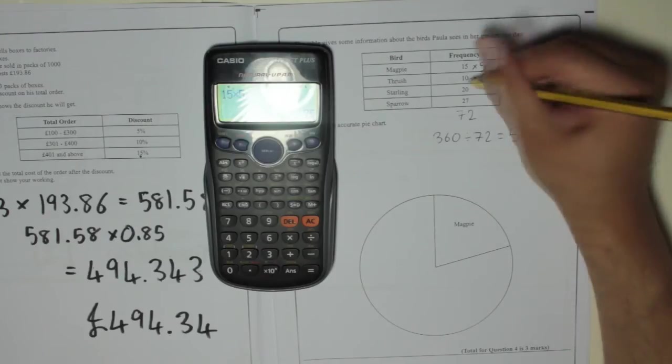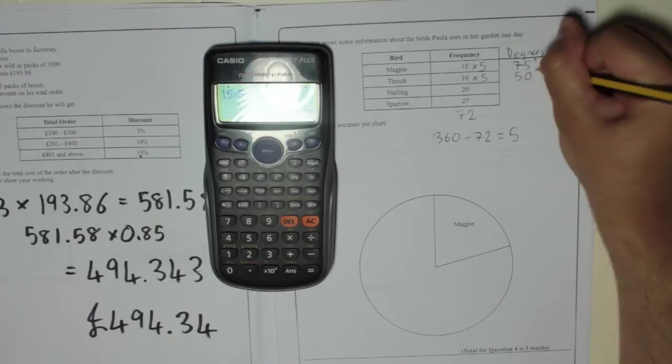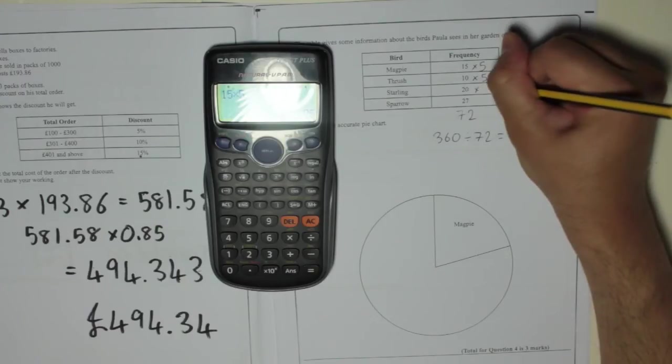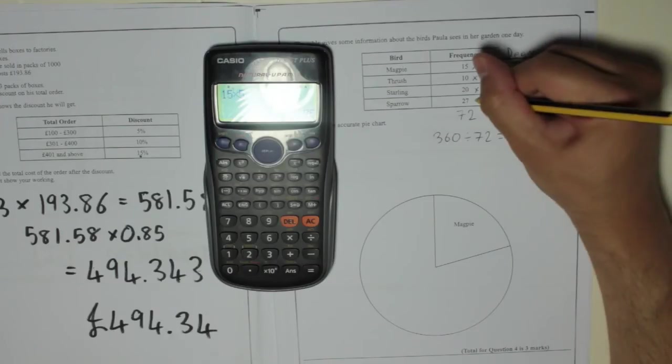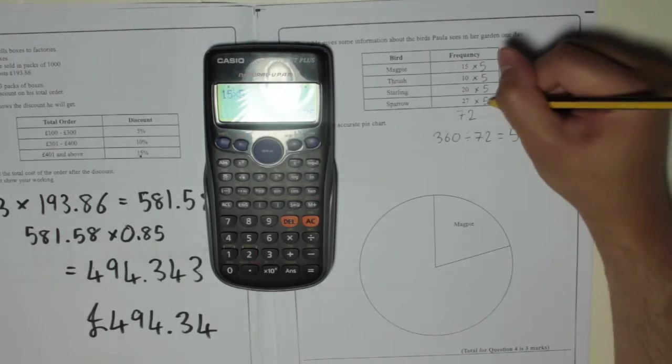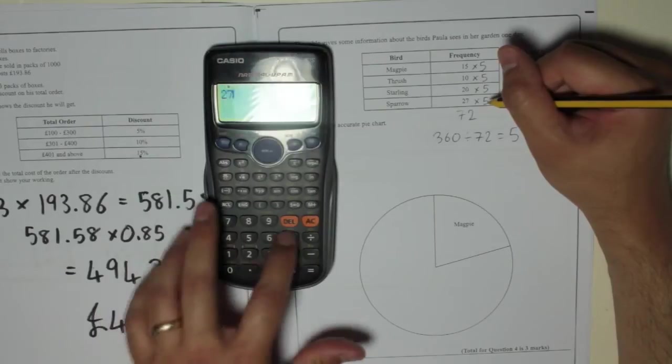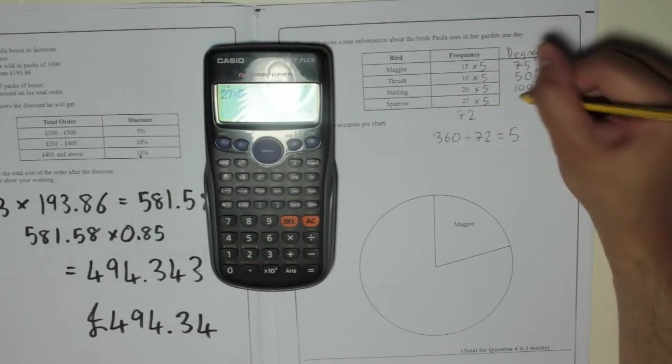This one's 10 times 5, which obviously is 50 degrees. 20 times 5 is 100 degrees. And 27 times 5, or you could do 27 times 10 divided by 2, but we'll use the calculator anyway. 135 degrees.